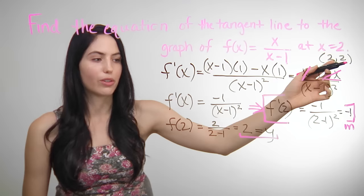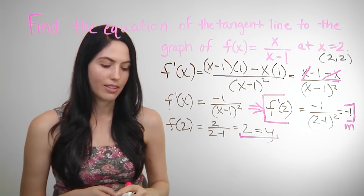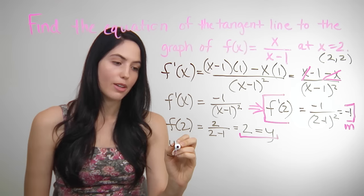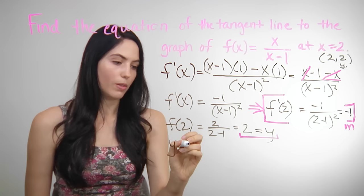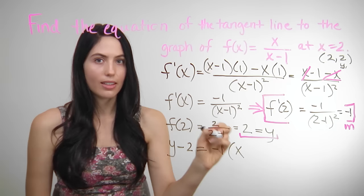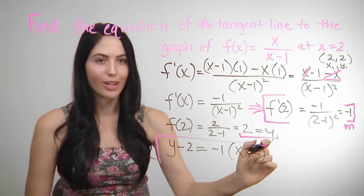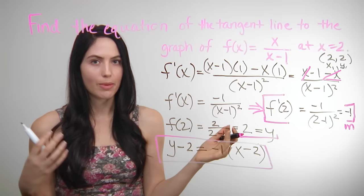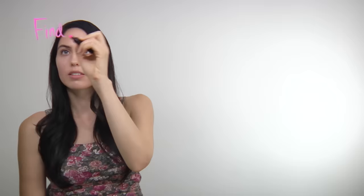The last step is to plug in your m, your y, and your x all into the point-slope form. That looks like y minus your y1, which is 2, equals m — your slope, which is negative 1 — times x minus the x coordinate, which is also 2 in this problem. This is technically correct — you can leave your answer in point-slope form. So this is the equation for the tangent line to this graph at x equals 2.